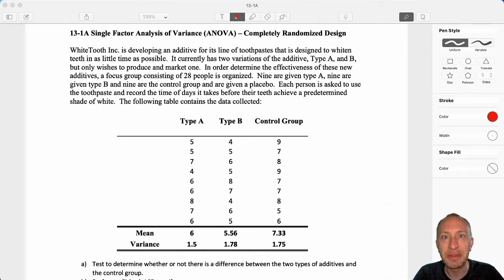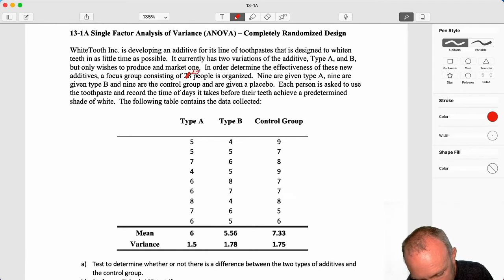White Tooth Inc. is developing an additive for its line of toothpaste that is designed to whiten teeth in as little time as possible. It currently has two variations of the additive, Type A and B, but only wishes to produce and market one of them. In order to determine the effectiveness of these new additives, we take a focus group of 28 people - well, clearly we don't have 28 people, that must be a typo, we have 27 people. Nine of them are given Type A, nine are given Type B, and nine are given a placebo.